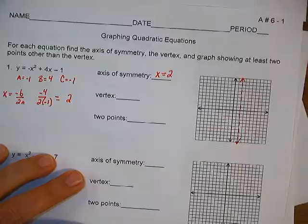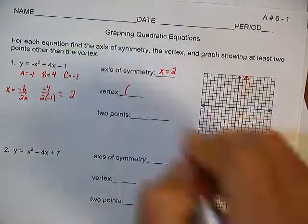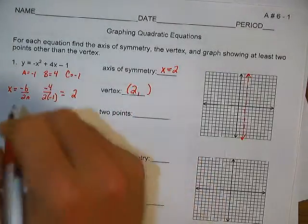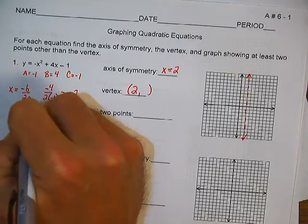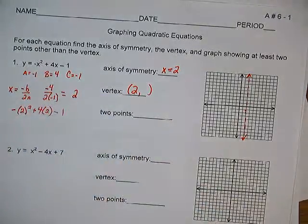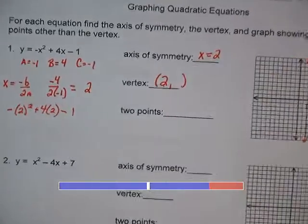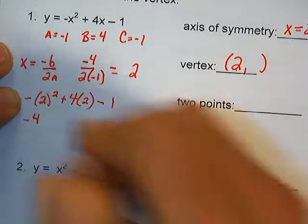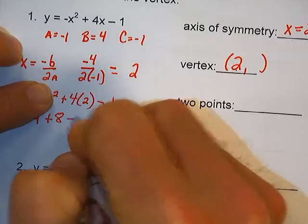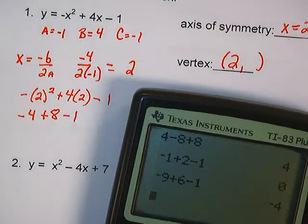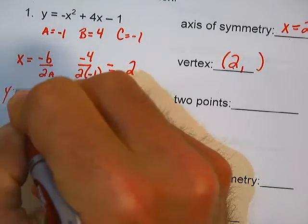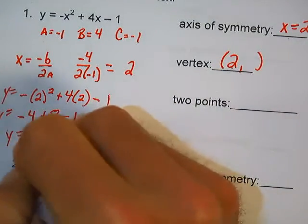Let's sketch that on our graph. Now it says find the vertex. We know the x value of the vertex is 2, so now we need to find y — substitute 2 in for x. Order of operations: 2 squared is 4, times negative 1 is negative 4. Then 4 times 2 is 8. So 4 plus 8 minus 1 is 3. My y value of the vertex is 3. So my vertex is at 2, 3.